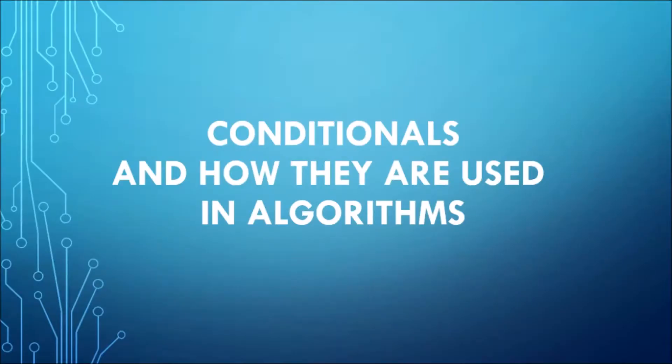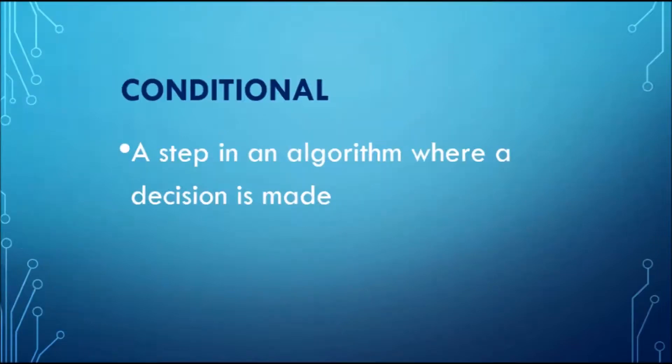In the previous video, I told you that an algorithm is a set of ordered steps that take you from a known starting point to a predictable endpoint. A conditional is a type of step in an algorithm where a decision must be made. Computers follow logical instructions and they need to know how to handle different decisions so that programs can proceed no matter what the outcome of those selections may be.